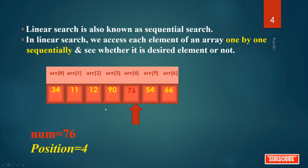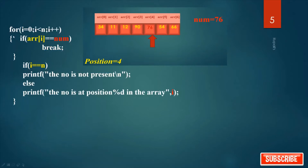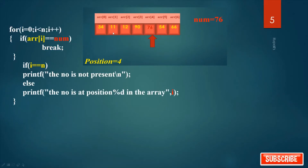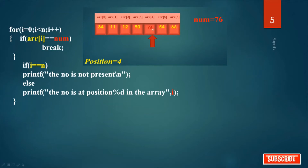This is the logic behind linear search. Now the coding. To search the whole array, you have to check each element whether your desired element is there or not. So a for loop starts from i=0 to i less than n. What is n here? How many number of elements? It is 7. So n is 7.